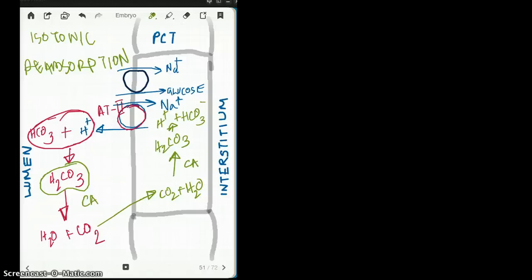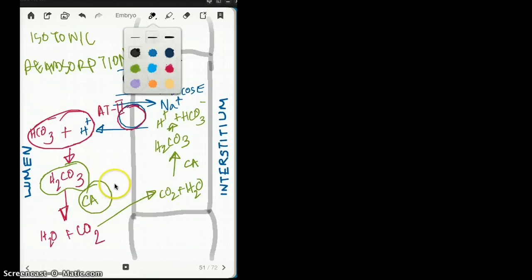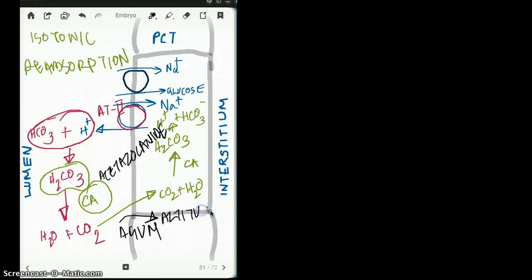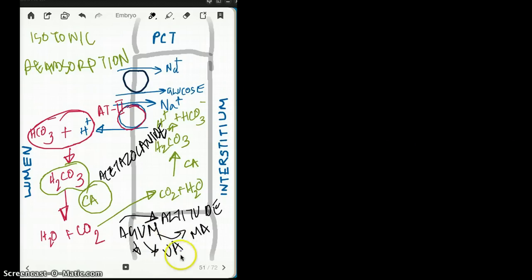There is a drug that inhibits carbonic anhydrase — that drug is acetazolamide. Its clinical uses can be remembered with the mnemonic 'A GUM': A for altitude, G for glaucoma, U for urinary alkalosis, and M for metabolic alkalosis. What this means is we use acetazolamide to make the urine alkaline and to make the plasma or serum acidotic.